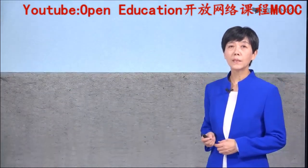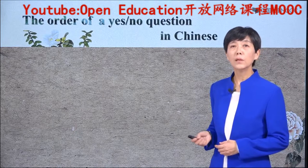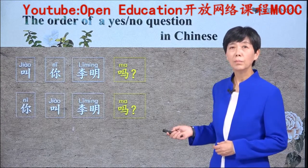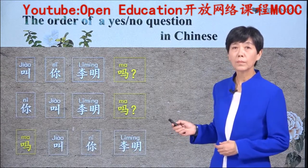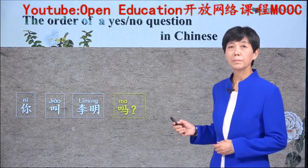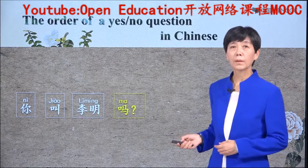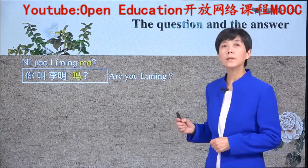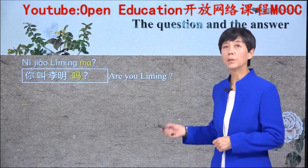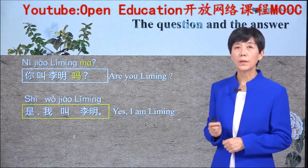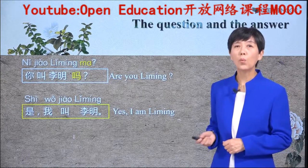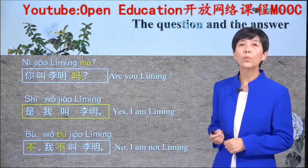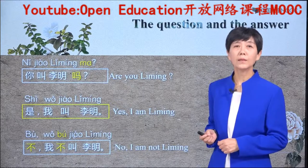So let's see which is correct: 叫你李明吗? or 你叫李明吗? The correct one is 你叫李明吗. Let's look at the question and answer together: 你叫李明吗? 是，我叫李明. Here, 是 means 'yes.' If you want to say no, you say 不. The full negative answer is 我不叫李明, meaning 'No, I am not 李明.'